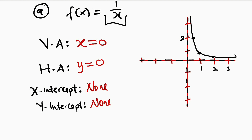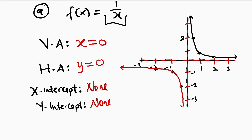Now let us test some negative numbers. When x = −0.5, we get 1/(−0.5) = −2, so we have the point (−0.5, −2). When x = −1, we get −1, giving the point (−1, −1). When x = −2, we get −0.5, giving a point near the axis. Our graph will never touch the x-axis or y-axis. This is the complete graph of y = 1/x.